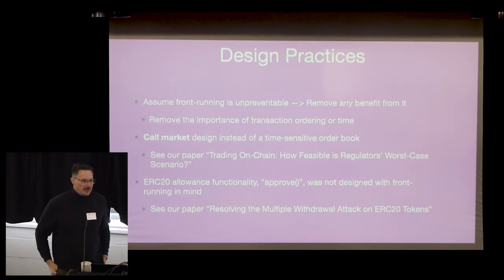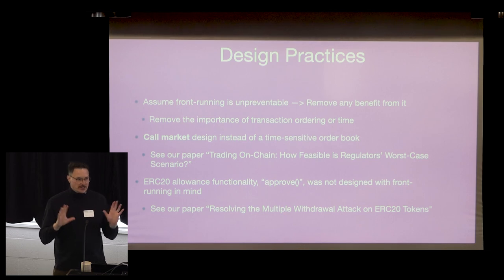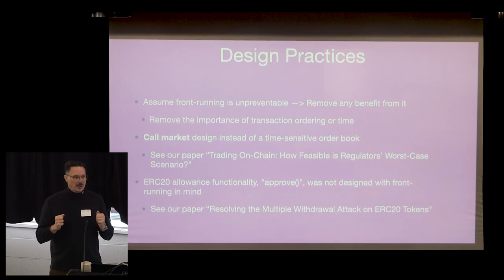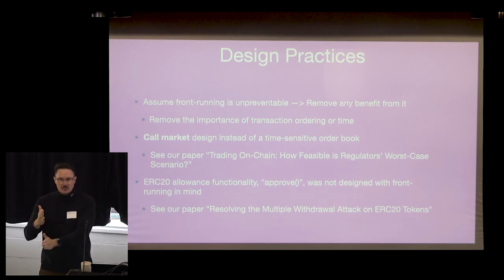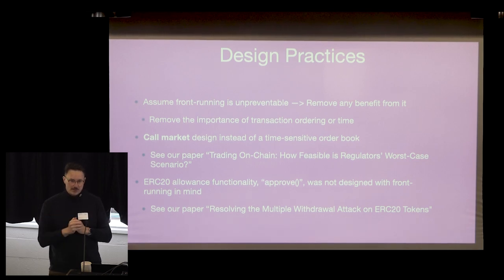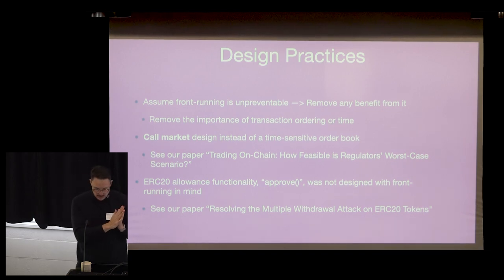The third category is designing around MEV. For example, instead of a continuous order book for token exchanges — where transactions are executed in order of receipt, enabling front-running — you can run a batch auction: hold all bids for a period, then execute all orders at once when the auction closes. Order doesn't matter; only price matters. Real stock markets like the New York Stock Exchange use this for opening and closing prices before switching to a continuous order book.